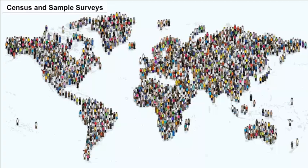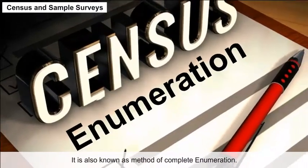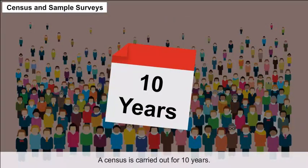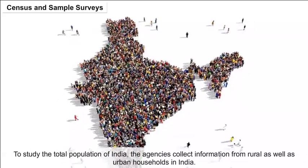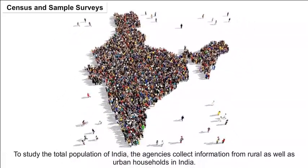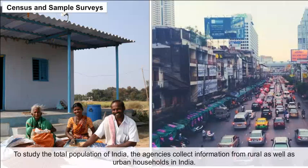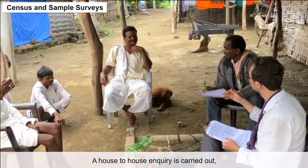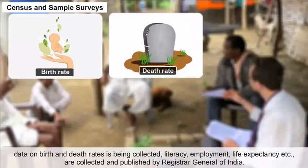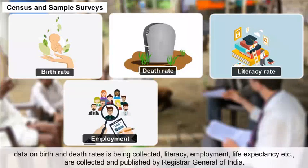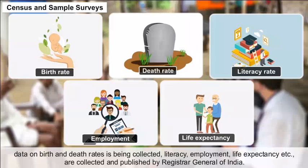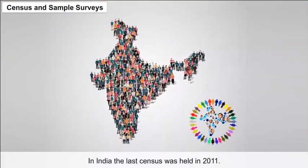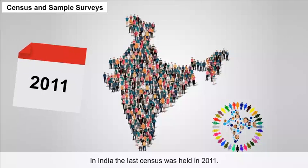Census and sample surveys: a census is a survey that includes every aspect of the population, also known as the method of complete enumeration. A census is carried out every 10 years to study the total population of India. Agencies collect information from rural and urban households, conducting house-to-house inquiries. Data on birth and death rates, literacy, employment, and life expectancy are collected and published by the Registrar General of India. The last census in India was held in 2011.